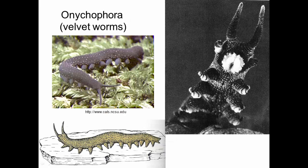Onychophorans, or velvet worms, are one of the other ecdysozoans. These guys have chitin in their skin, so they'll crunch if you step on them. Chitin is the hard substance that insects and arthropods have. You can see they're not really like a worm because they've got limbs, and they're not really like an arthropod because they don't have a hard shell. But chitin is synapomorphic for them and arthropods. They tend to live in the tropics, but they are their own phylum, as distinct from everything else as arthropods are.